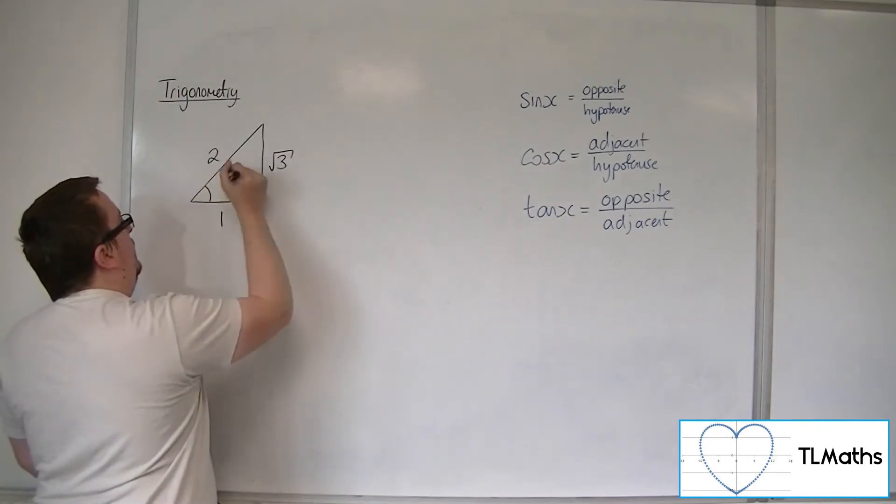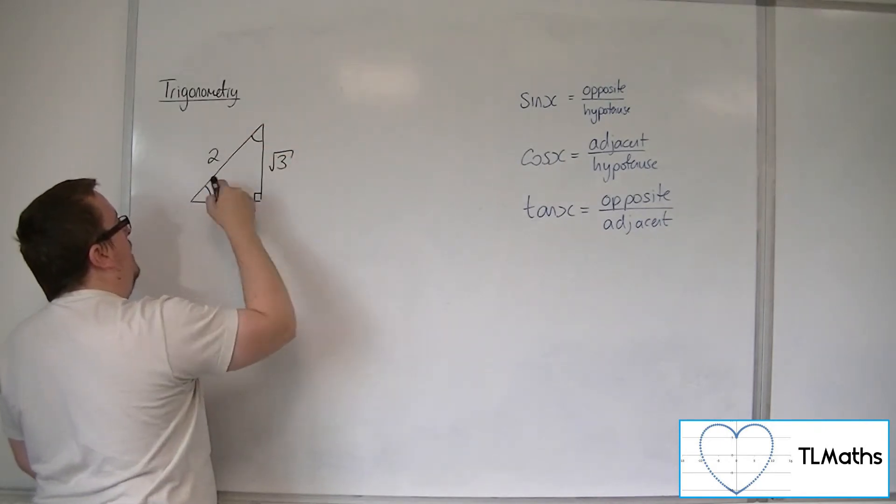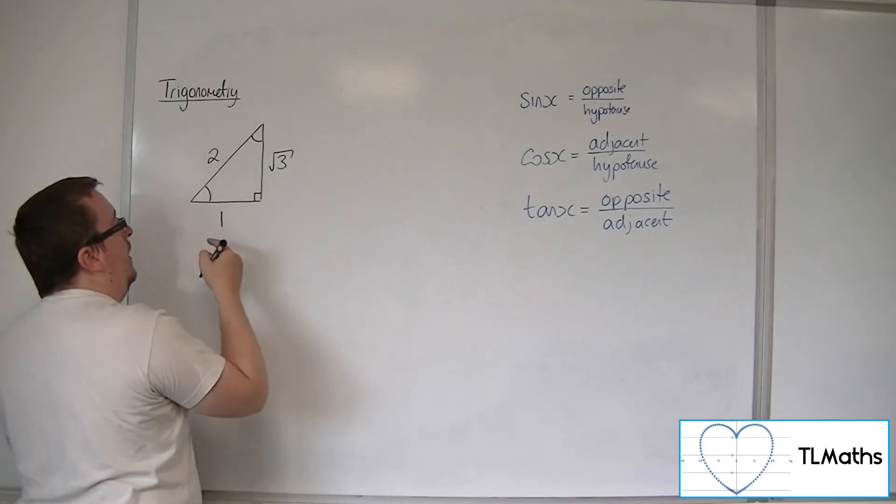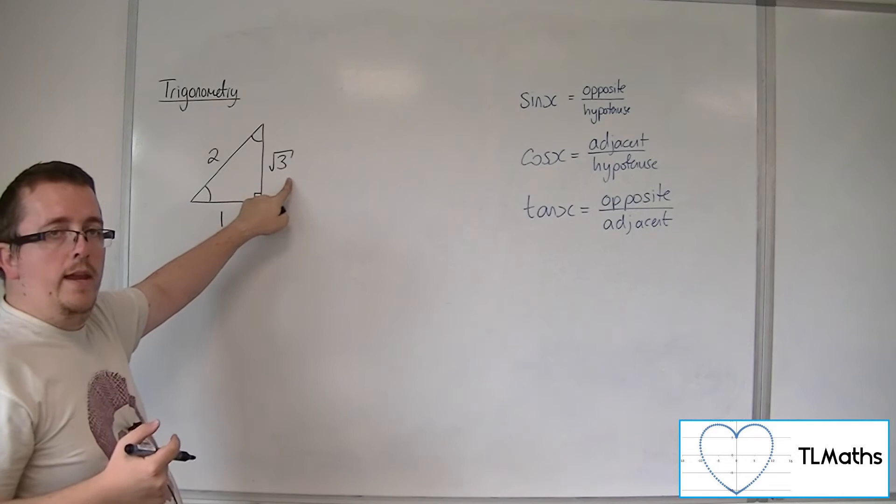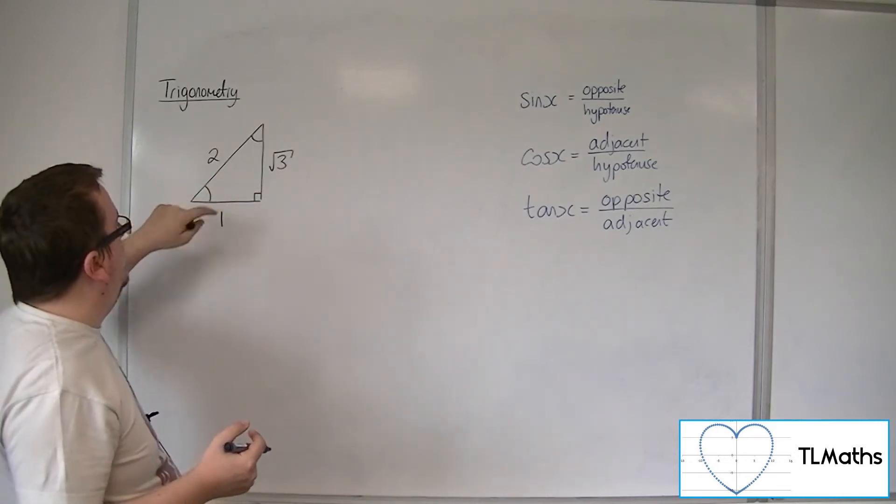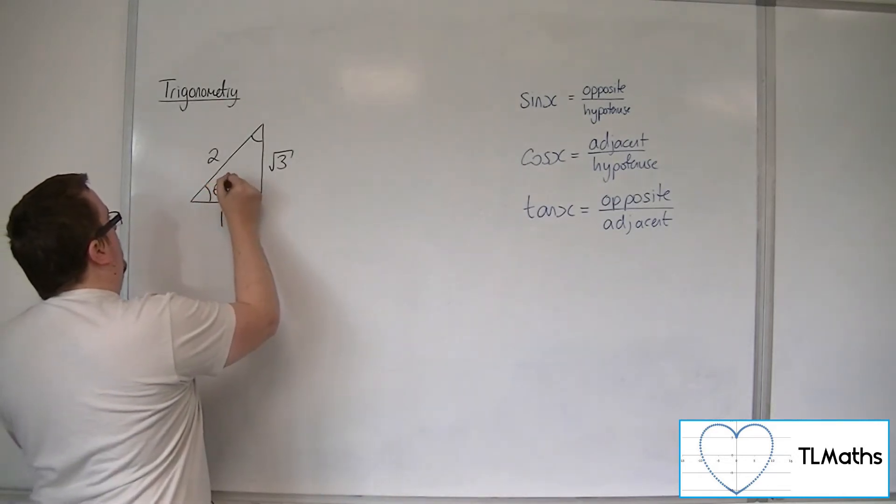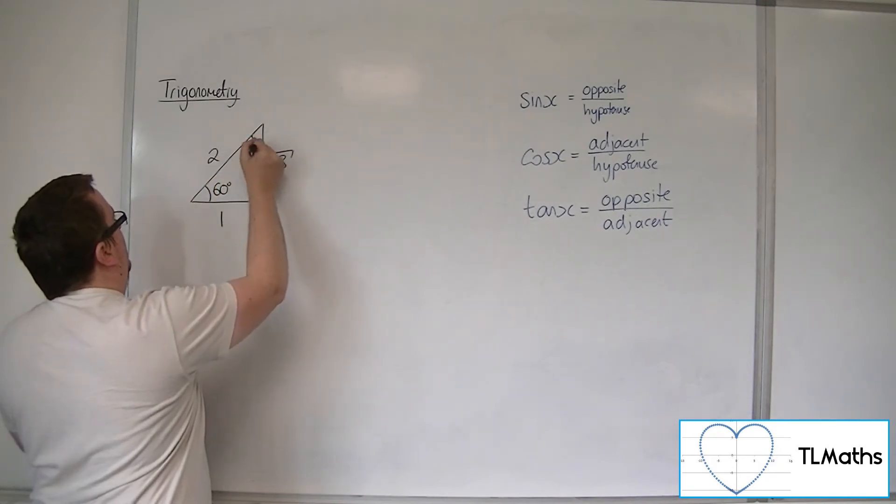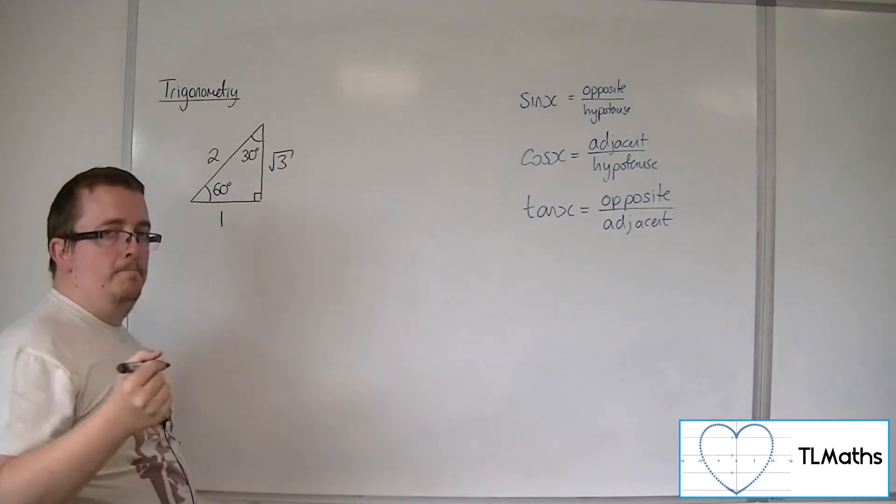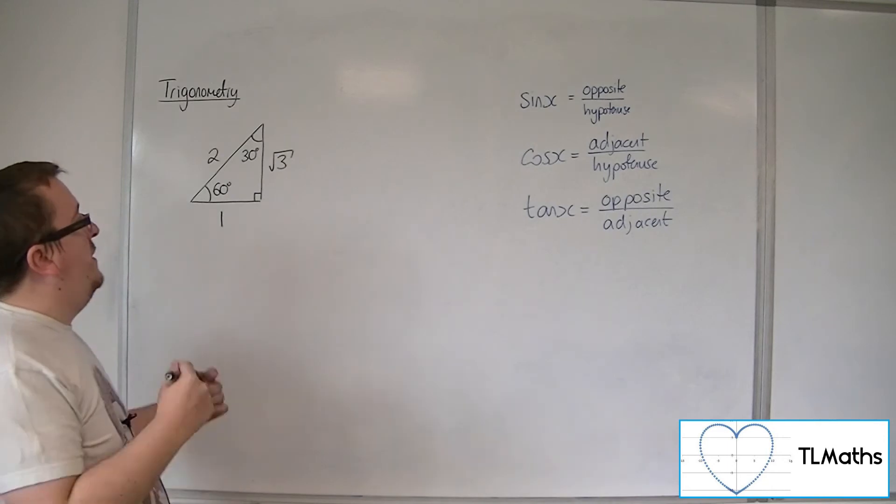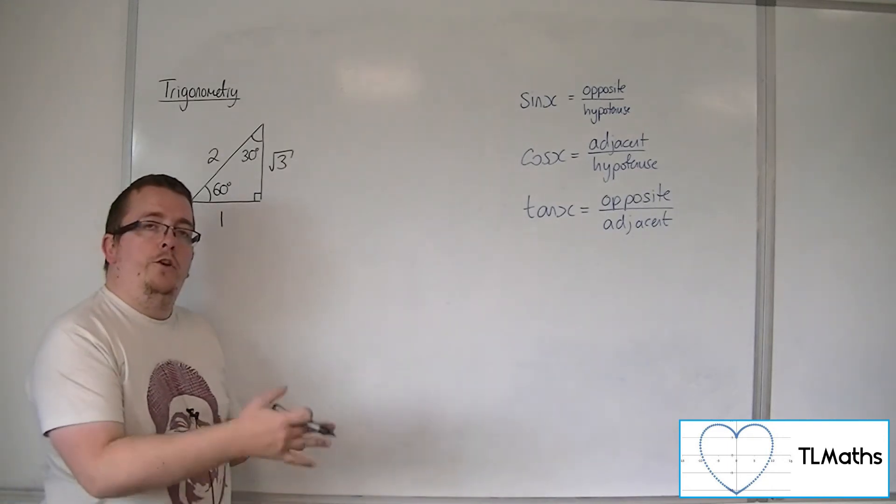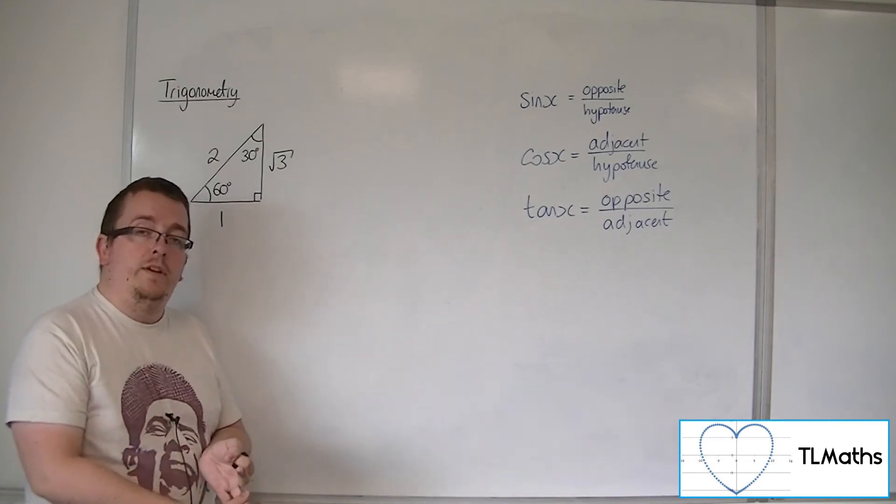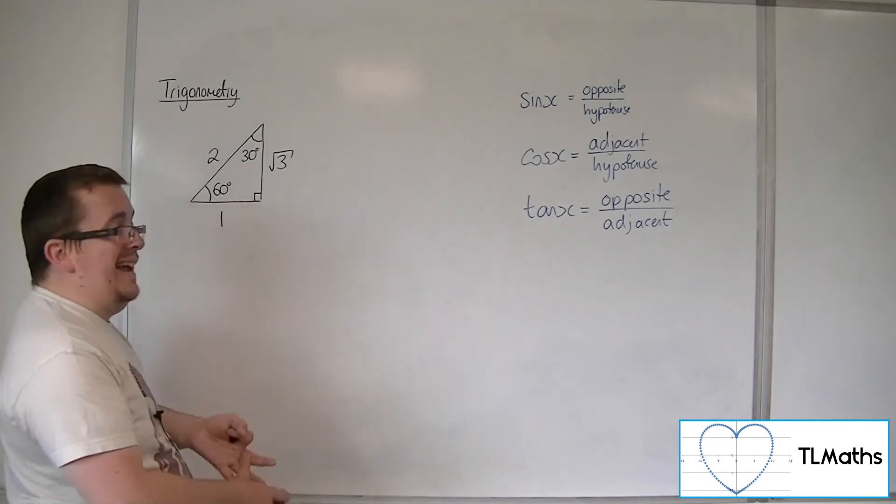It has two angles here, one of which this base one, because one is shorter than root 3, this will be the larger of the two. This angle is 60 degrees and this angle left over must then be 30. OK, this allows you to find sine, cos and tan of 60 and 30 degrees in exact form.